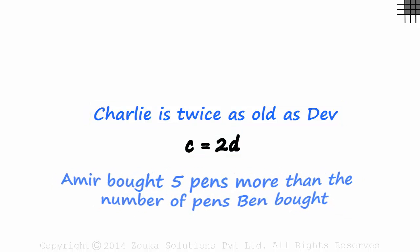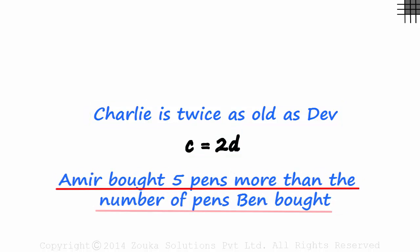Here's the second line. Armour bought five pens more than the number of pens Ben bought. We can assume the number of pens Armour bought to be A, the number of pens Ben bought to be B.